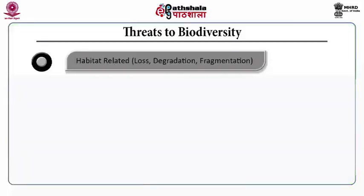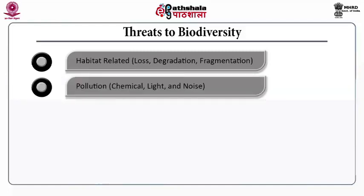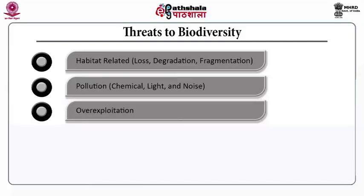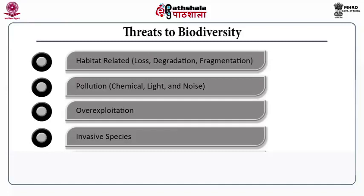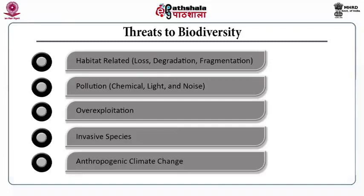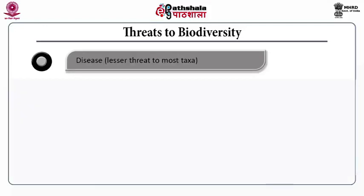What are the threats to biodiversity? First is habitat-related: biodiversity is being threatened due to loss of habitat, degradation of habitat and fragmentation of habitat. Second is pollution — that may be chemical pollution, light pollution and noise pollution. Third is over-exploitation. Thereafter comes the invasion of foreign species. And lastly, due to anthropogenic activities and climate change. Diseases are also responsible for the extinction of biodiversity. UV radiations are primarily a threat to amphibians.